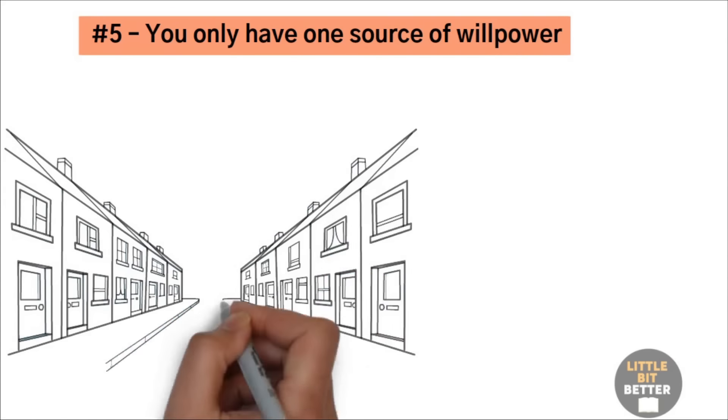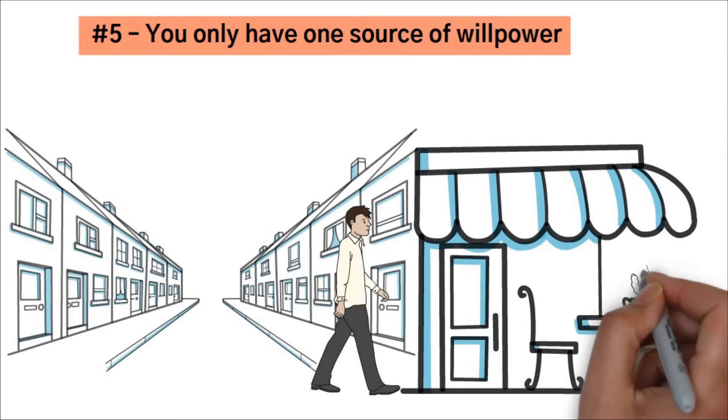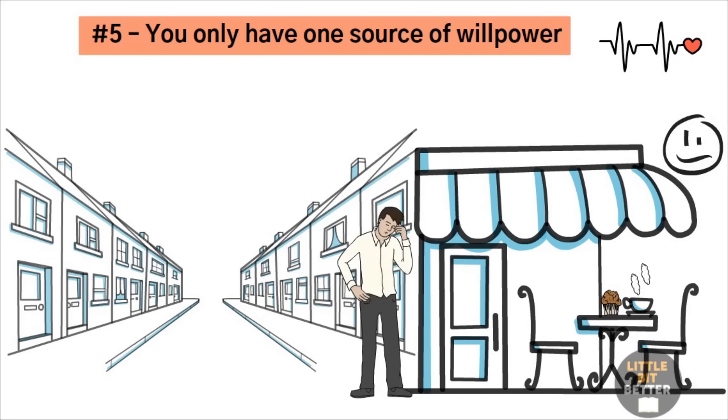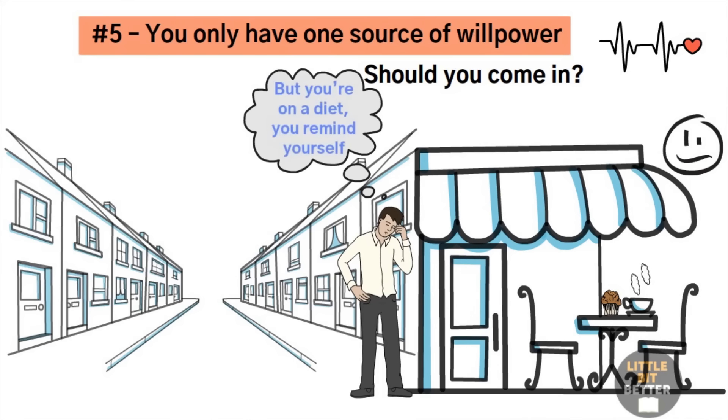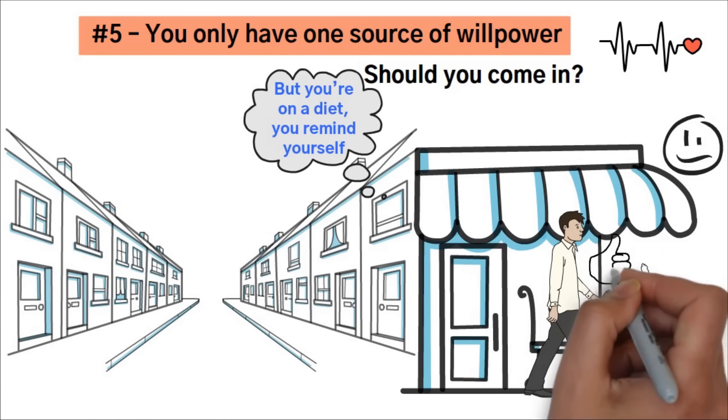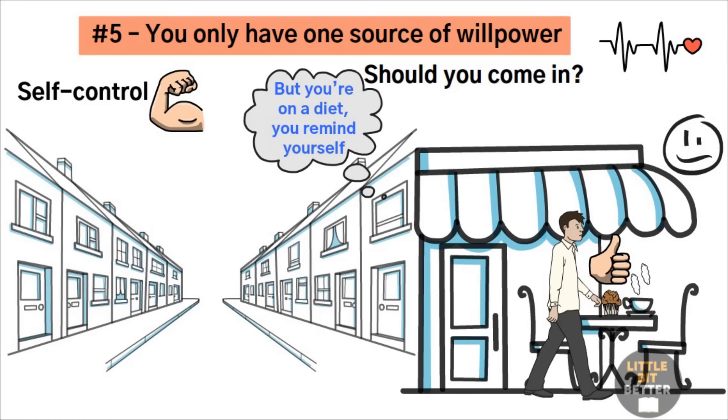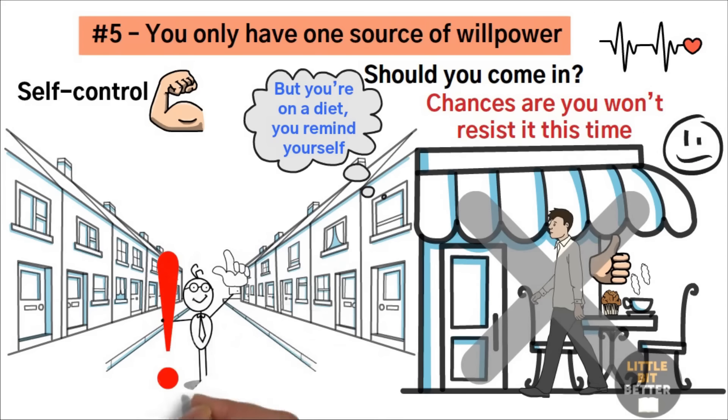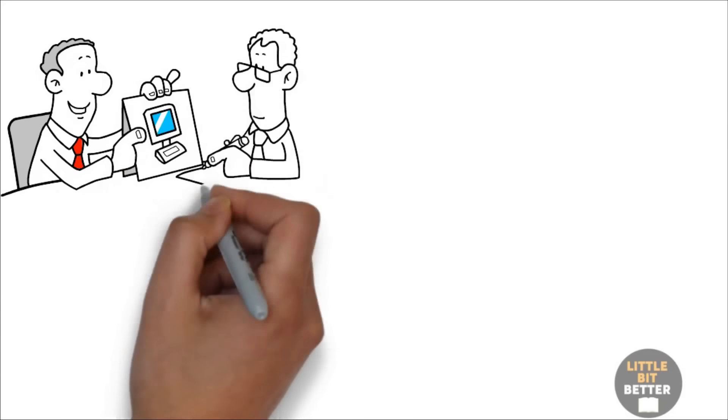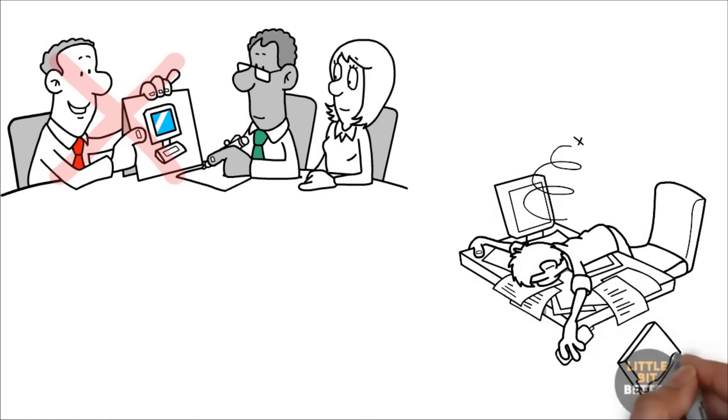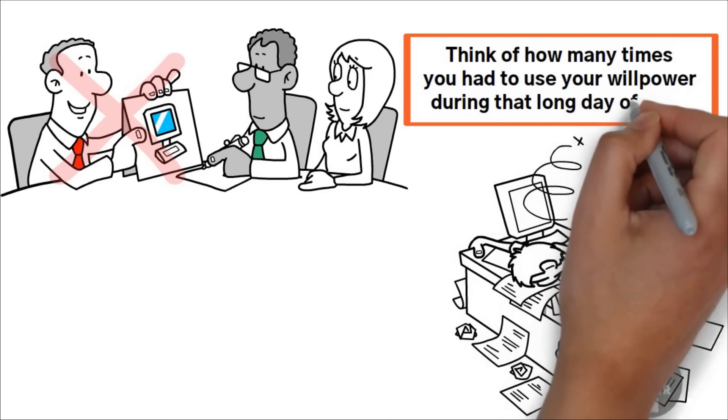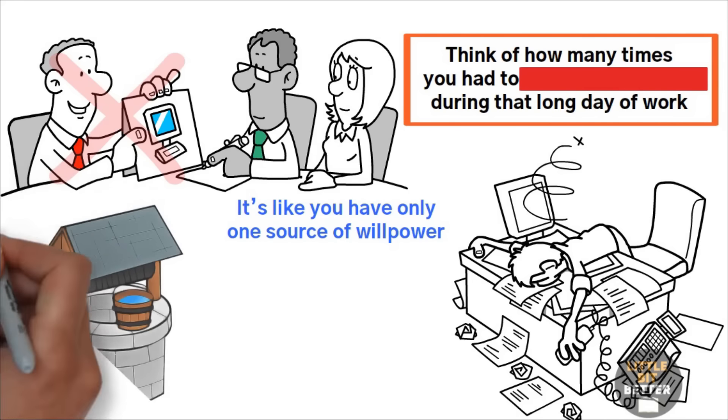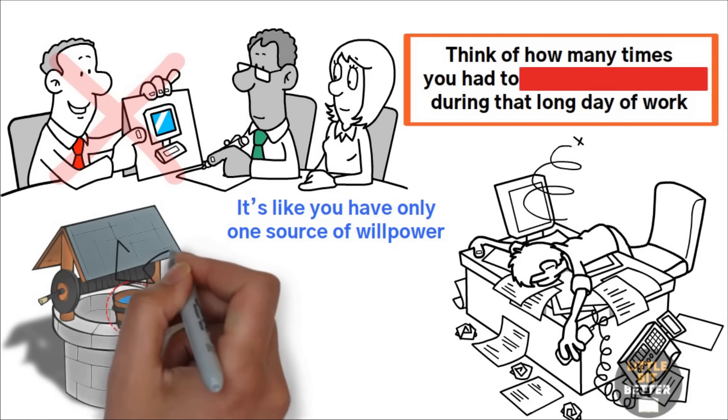Number five, you only have one source of willpower. Let's say you're on your way to work and you pass by a bakery. From outside, you can smell the coffee and the sugar. You become tense, your mouth salivates, and your heart beats faster. You want it so bad, but you have that moment of hesitation. Should you go in? But you're on a diet, you remind yourself. You force yourself to keep walking, feeling satisfied with your self-control. Once again, you could resist it. Well, on the way back, you better avoid passing by the bakery again, because chances are you won't resist it this time. The reason is that you've already worn out your willpower. Think of your day at work and how many things you felt like doing but couldn't, or felt like not doing, but you had to. Think of how many times you had to use your willpower during that long day of work.